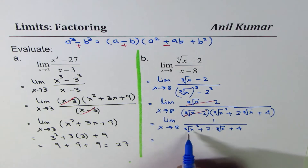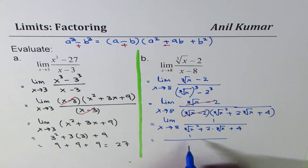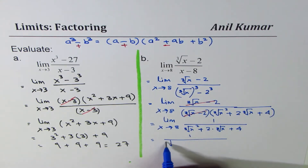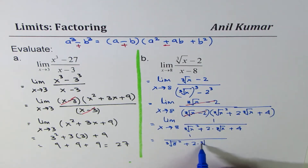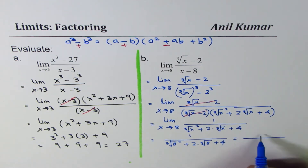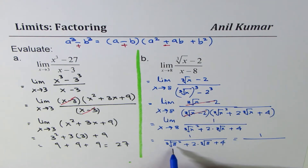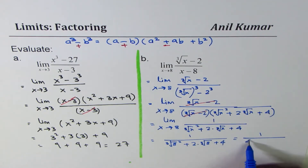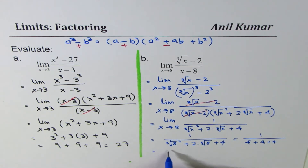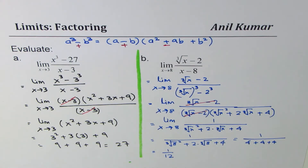If I substitute 8, I get 1 over (cube root of 8 squared plus 2 times cube root of 8 plus 4). Cube root of 8 is 2, so 2 squared is 4. We get 4 plus 4 plus 4, which is 12. The answer is 1 over 12 for this particular question. Go through the steps and I hope you appreciate it.